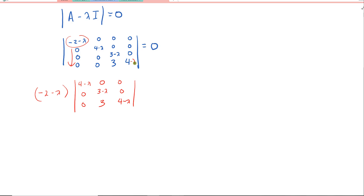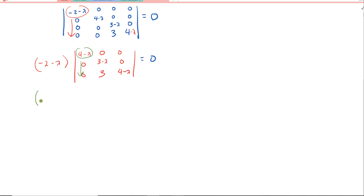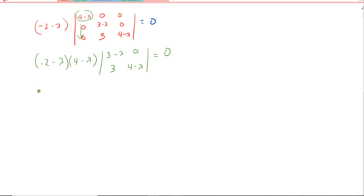Then I'll choose to expand down this row. That gives us negative 2 minus lambda times 4 minus lambda times the determinant of the 2 by 2 matrix: 3 minus lambda, 0; 3, 4 minus lambda. And this equals zero.